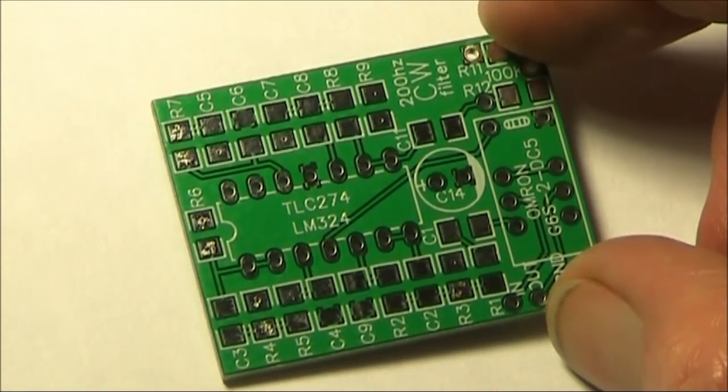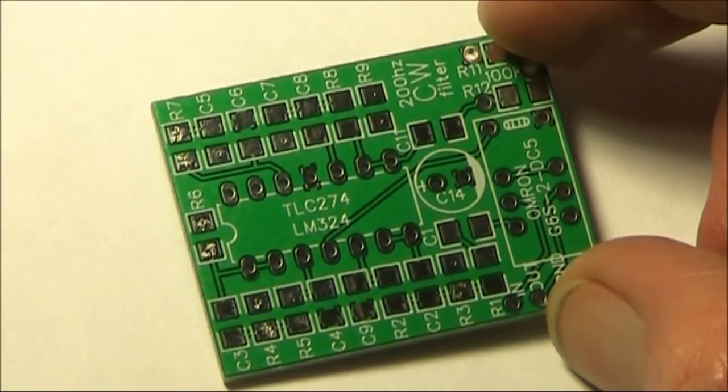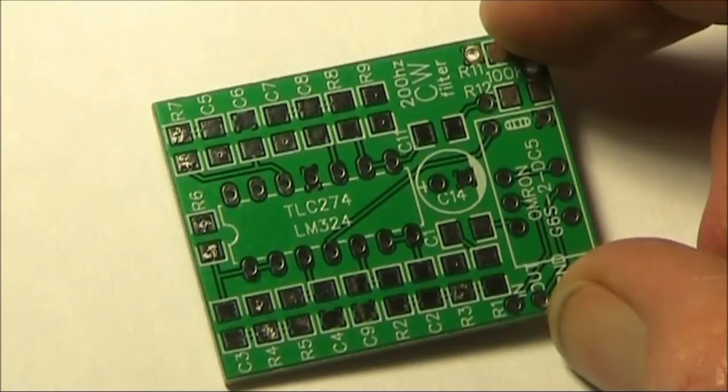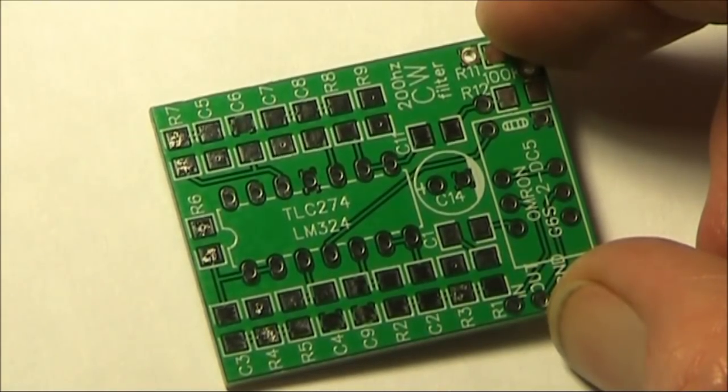The filter uses a common LM324 quad op amp IC. The spacing between the pads is quite good, so this would be quite a good project for those starting with surface mount construction.